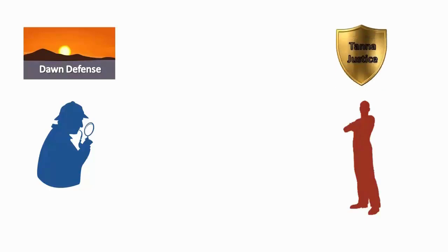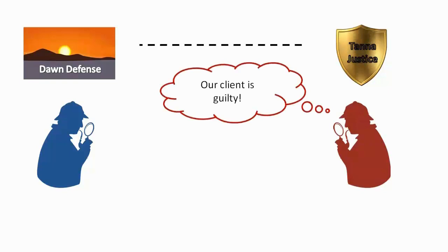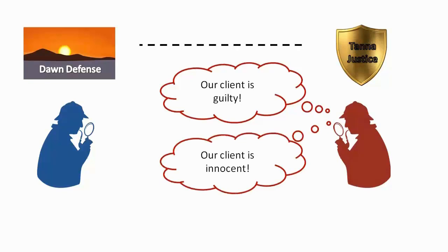Let's suppose Bill subscribes to his own protection agency — Tanner Justice, a competitor of Dawn Defence. As soon as Bill is accused, he's on the phone to Tanner Justice, claiming he is innocent and being unjustly threatened with force. Tanner Justice calls Dawn Defence to see what evidence they have and conducts their own investigation to determine whether their customer is truly being unjustly threatened — because he is innocent — or justly threatened because he is guilty. If Tanner Justice concludes Bill is guilty, they will back down and advise him to pay up. If they conclude Bill is innocent, they will defend him, considering the threats made by Dawn Defence to be aggression against their customer rather than retaliation on behalf of Alice.